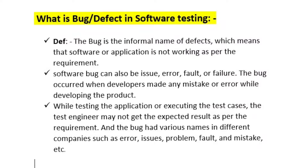We can find bugs in software testing. We can find bugs and assign them. We can find issues in a process, in requirements, in the application, in design documents, and in application behavior — for example, a login screen with username, password, and login button.